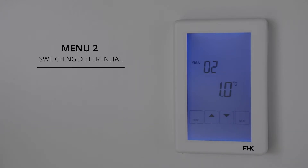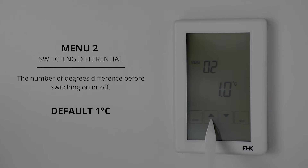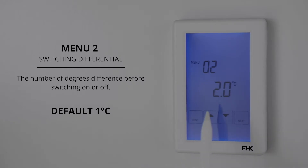Menu 2 is the unit switching differential. Switching differential is the number of degrees difference before switching on or off. So if it is on one degree, your floor will switch on a half degree before your set temperature and switch off a half degree after your set temperature. If you set this at two degrees, your floor will come on one degree before your set temperature and one degree after. Once you have selected your preference, press next.